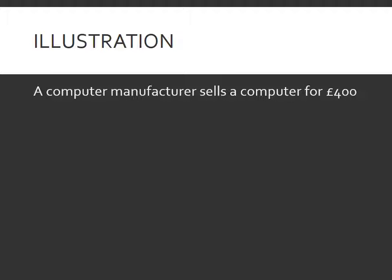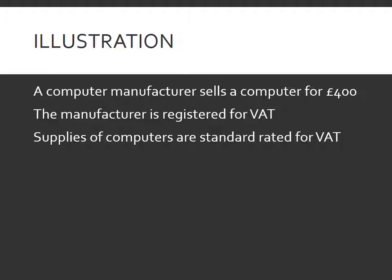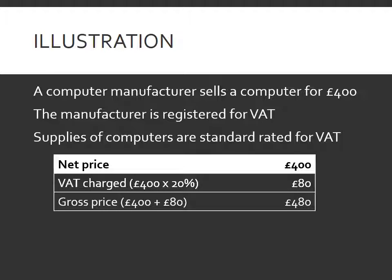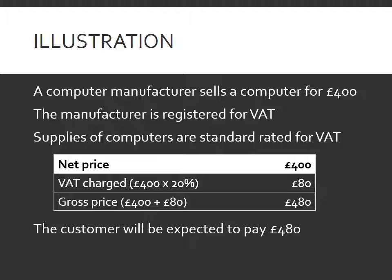So let's have a look at how VAT would be calculated. Let's say we've got a computer manufacturer that sells a computer for £400. The manufacturer is registered for VAT, and computers are standard rated for VAT, which means that the 20% VAT rate should be applied. The net price is £400. The VAT charged on that is 20% of £400, or £80. And the gross price, which is the net plus the VAT, is £480 — and that is the amount the customer has to pay.